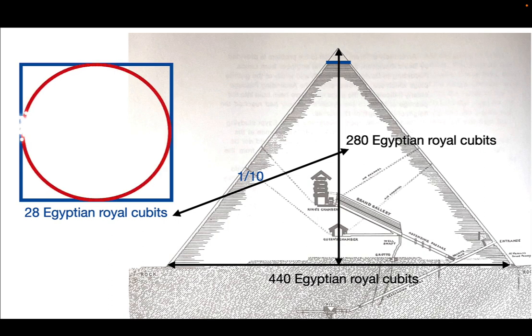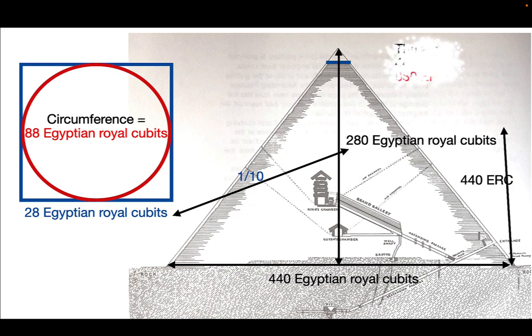And if we take the end circle there, the circumference would be 88 royal cubits. So if we take two sides of the Great Pyramid, 440 plus 440, it's 880 Egyptian royal cubits.